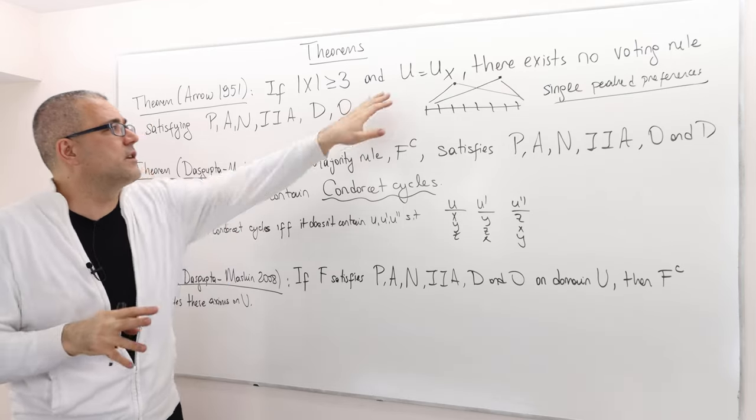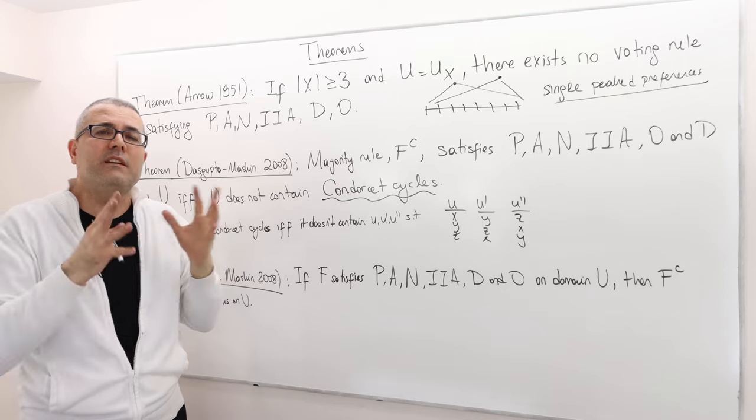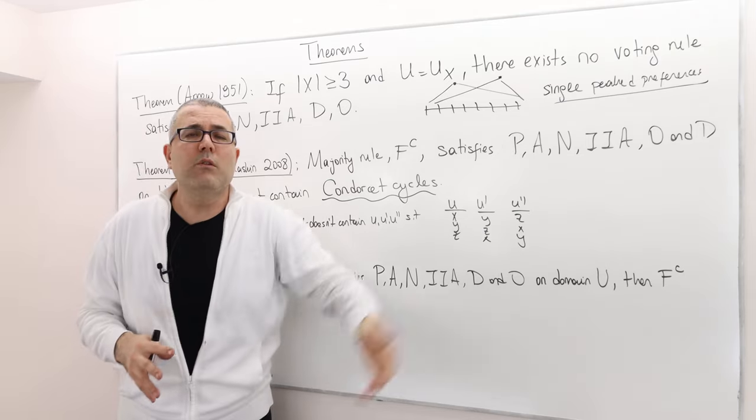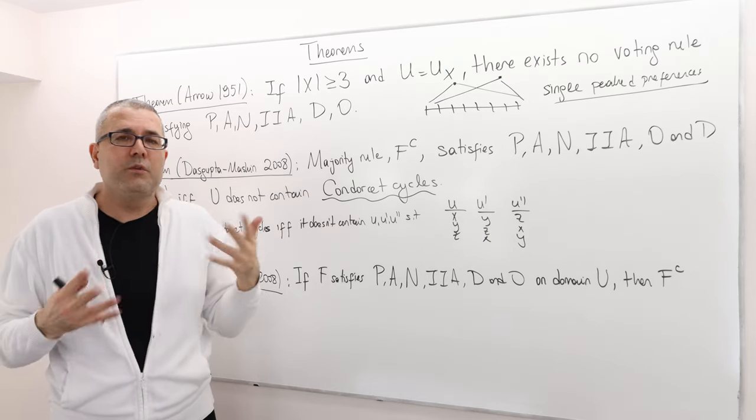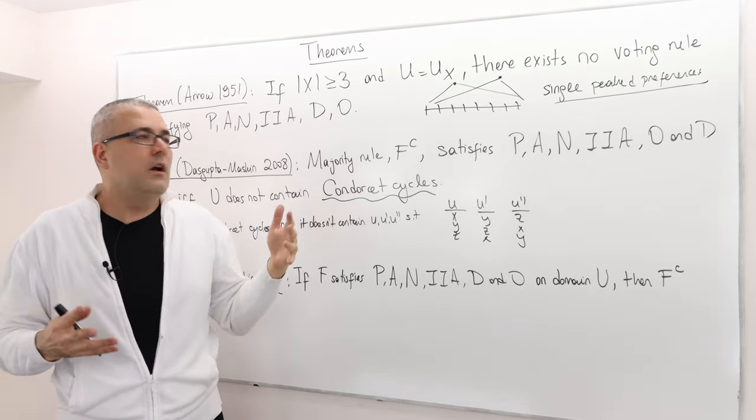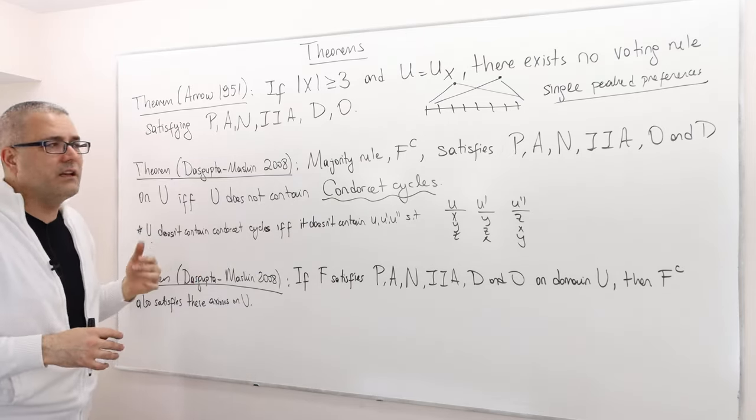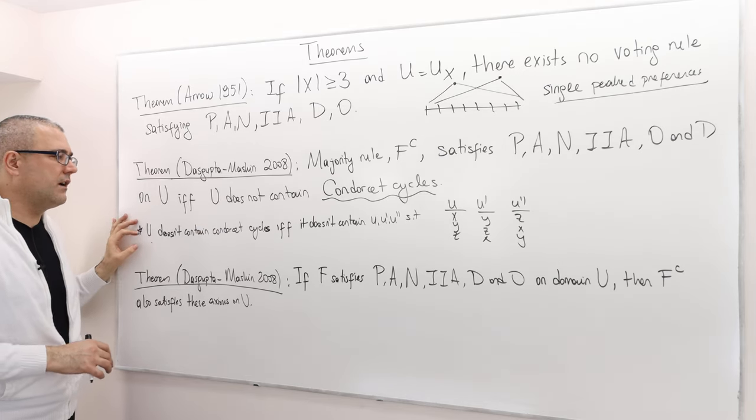If the domain satisfies that it doesn't have Condorcet cycles, whatever it means, then under this domain majority rule satisfies all those six properties, which is awesome. So maybe we should look at preference domains which don't contain Condorcet cycles.